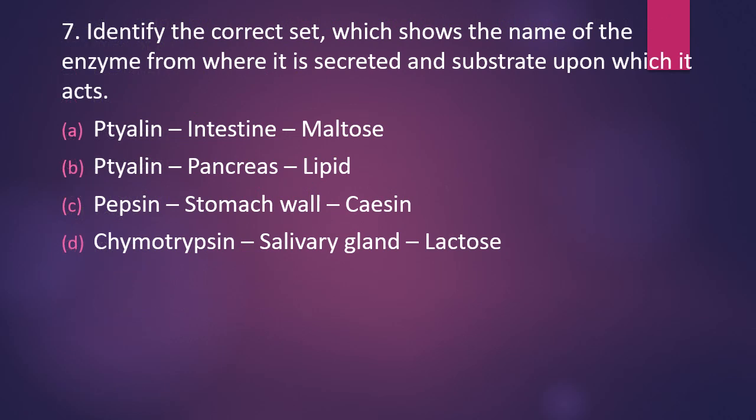Question number seven: identify the correct set showing the enzyme name, where it is secreted from, and the substrate it acts upon. Options include: ptyalin secreted from intestine acts on maltose; ptyalin secreted from pancreas acts on lipid; pepsin secreted from stomach wall acts on casein; or chymotrypsin secreted from salivary gland acts on lactose. The correct answer is option C — pepsin is secreted by the stomach wall and acts on casein.